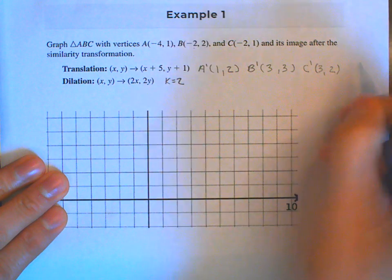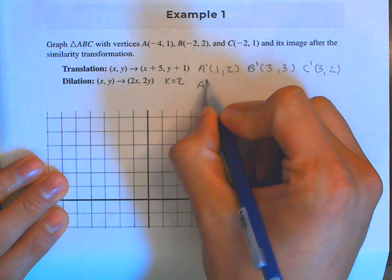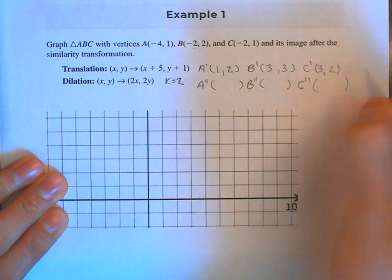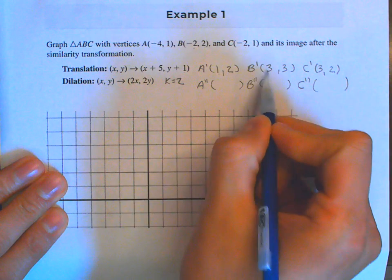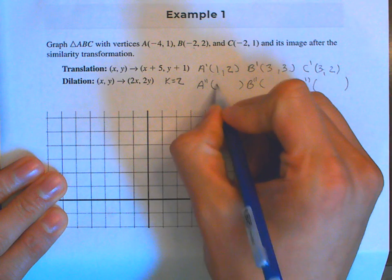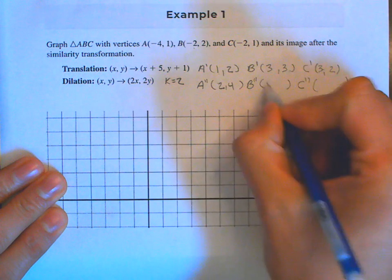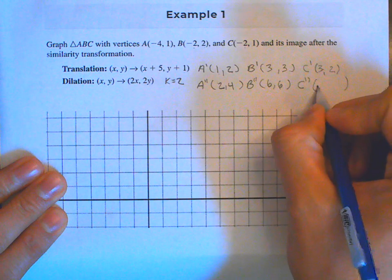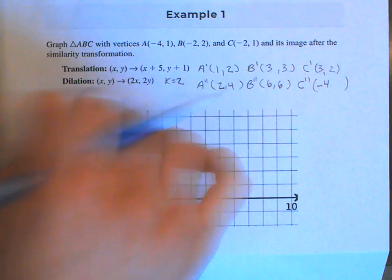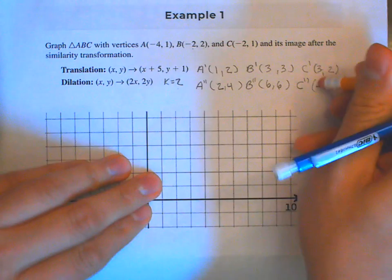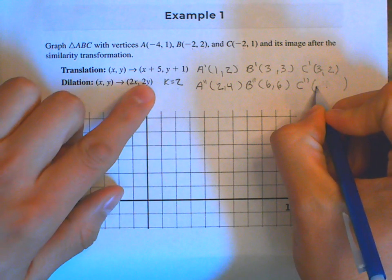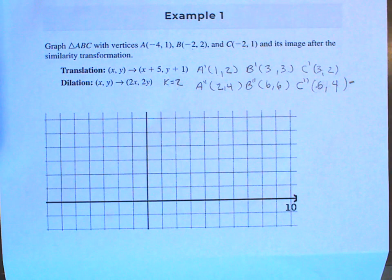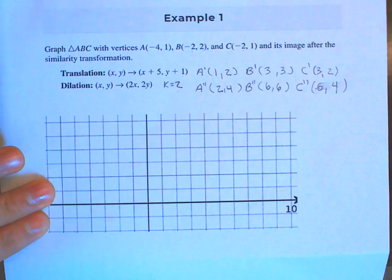Those are the coordinates of the first image. To get the coordinates of the second image, multiply by the scale factor of two. So multiplying all of those by two gives: 2 times 1 is 2, 2 times 2 is 4; 2 times 3 is 6, 2 times 3 is 6; and 2 times 3 is 6, 2 times 2 is 4.